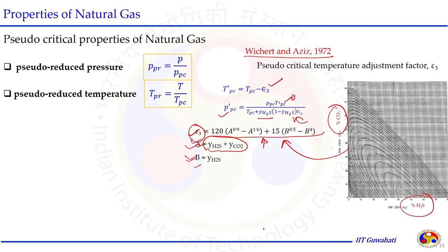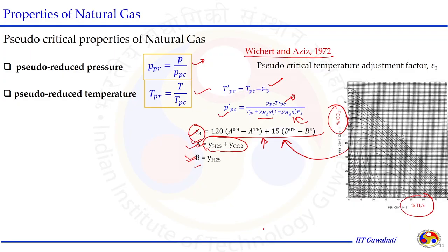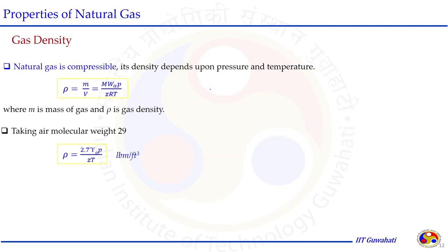Two other important properties are pseudo-reduced pressure and pseudo-reduced temperature — most charts for viscosity and compressibility are expressed in this form. By definition, pseudo-reduced pressure is the actual pressure divided by the pseudo critical pressure of the mixture, and pseudo-reduced temperature is the actual temperature divided by the pseudo critical temperature of the gas mixture.